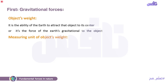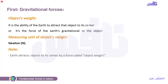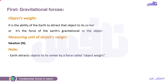Measuring unit of object's weight — of course newton. Earth attracts this object to its center by a force called object's weight. هل الweight of الobject differ from place to another؟ طبعا differ from place to another، لأن الweight بيعتمد على the planet. فطبعا الweight ده variable physical quantity.